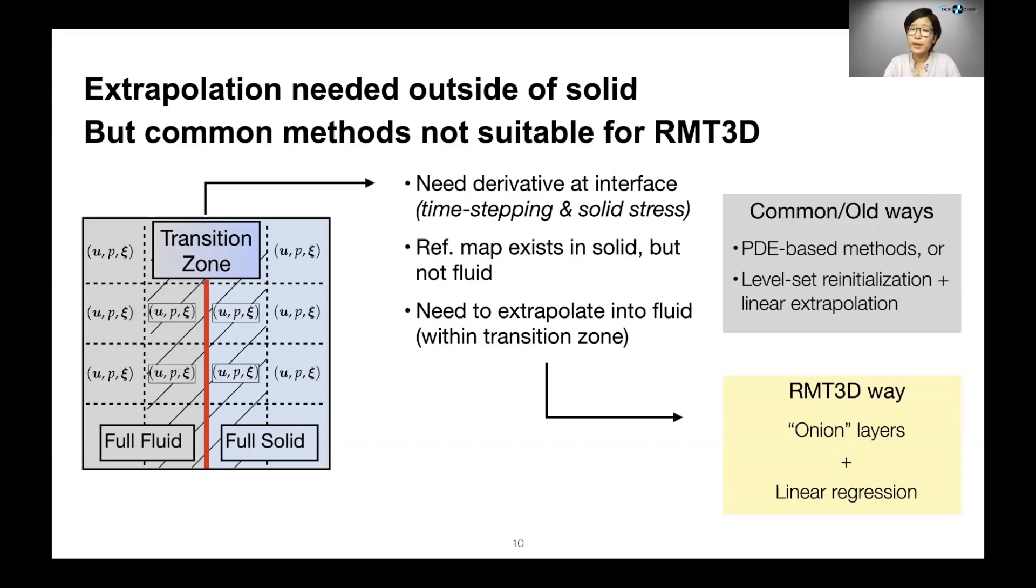However, for level set re-initialization, we need methods such as fast marching and that quickly become unfavorable in 3D because of its computational cost. So in 3D, we decide to go with a simpler yet as robust method of defining extrapolation order and building the extrapolation values.